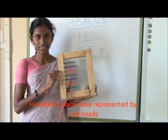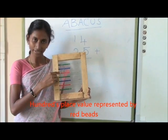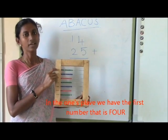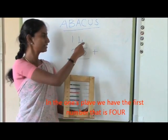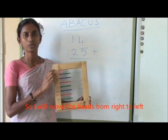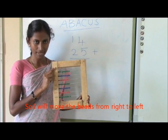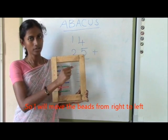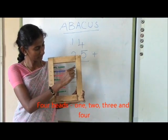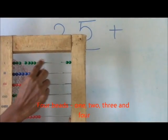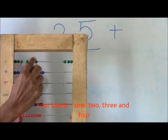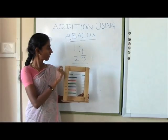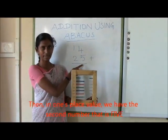Hundreds place value is represented by the red bits. In the ones place, the first number is 4. So I will move the bits from right to left — 4 bits: 1, 2, 3 and 4.